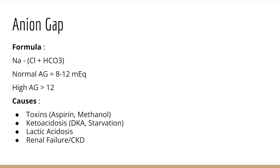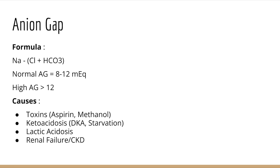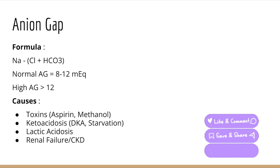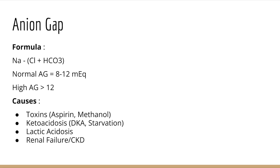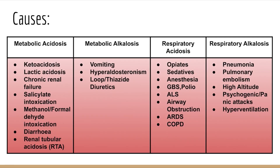One more concept: anion gap, calculated as sodium minus (chloride plus bicarbonate). Normal anion gap is 8 to 12 mEq/L; anything above 12 is a high anion gap. High anion gap is important because its causes include toxins like aspirin and methanol, diabetic ketoacidosis (most common), lactic acidosis, and renal failure. CKD patients generally have high anion gap metabolic acidosis — so if a CKD history is given, the better answer is high anion gap metabolic acidosis.